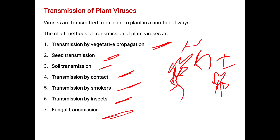In vegetative propagation, the infected part that is cut or broken from the parent body may infect the growing part of the parental body. In seed transmission, we must check whether the seed being grown is free from viral and bacterial infection — if the seed is infected, ultimately the plant will also be affected.